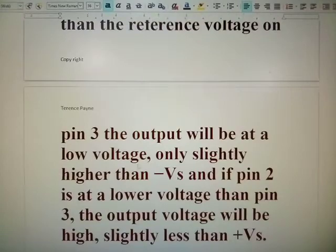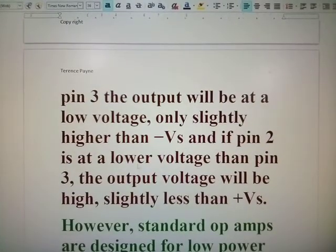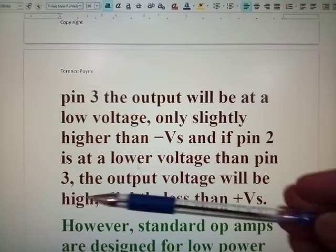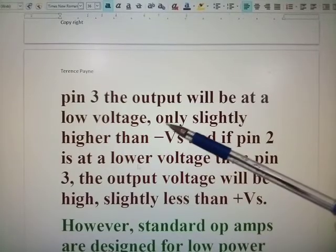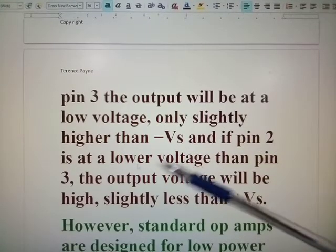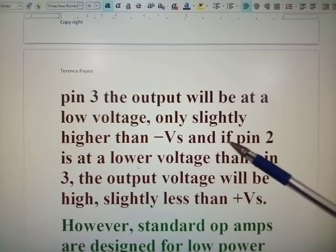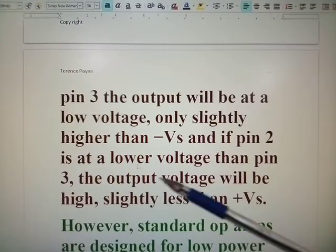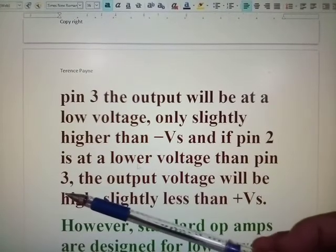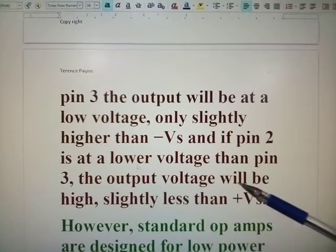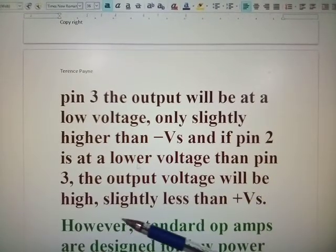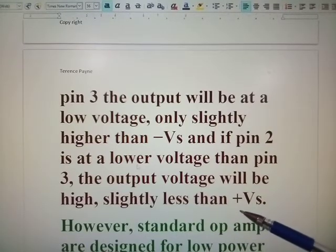Whenever the voltage applied to pin two is higher than the reference voltage on pin three, the output will be at a low voltage only slightly higher than minus V supply. And if pin two is at a lower voltage than pin three, the output voltage will be higher, slightly less than plus the supply voltage.